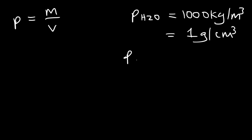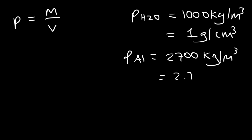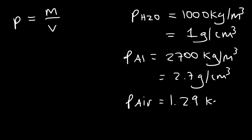The density of aluminum, for example, is 2,700 kilograms per cubic meter, which is about 2.7 grams per cubic centimeter. The density of air is much less — it's 1.29 kilograms per cubic meter.